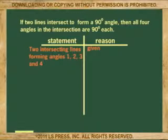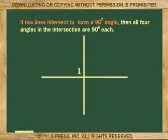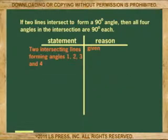First statement: two intersecting lines forming angles 1, 2, 3, and 4. The reason: given.